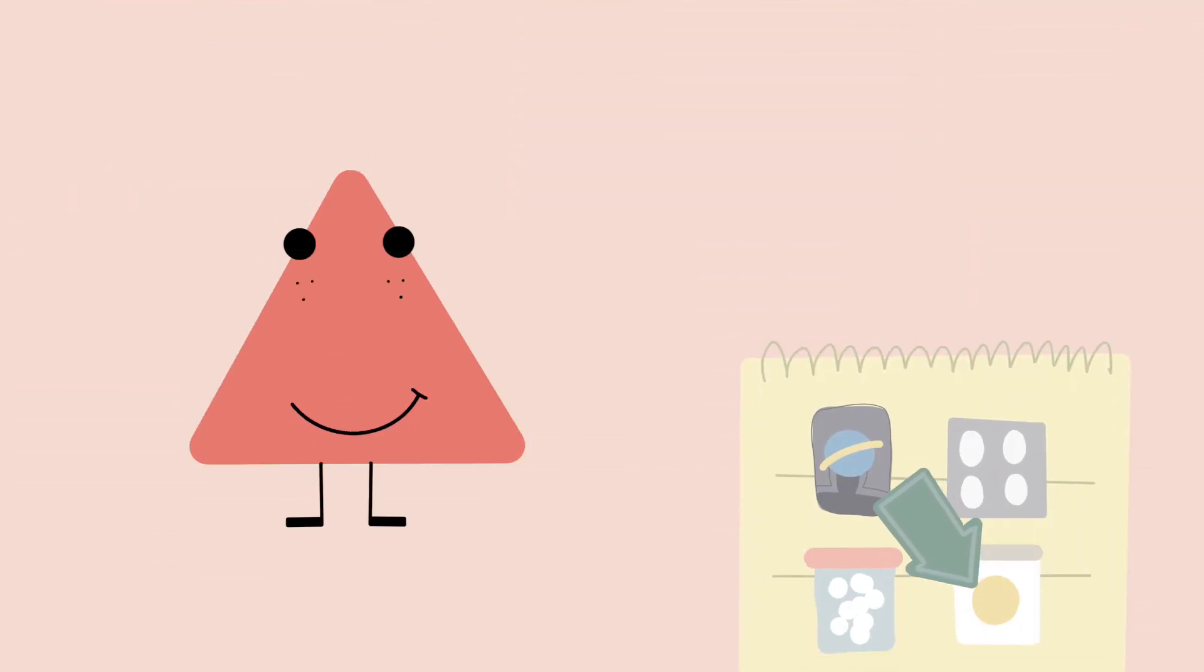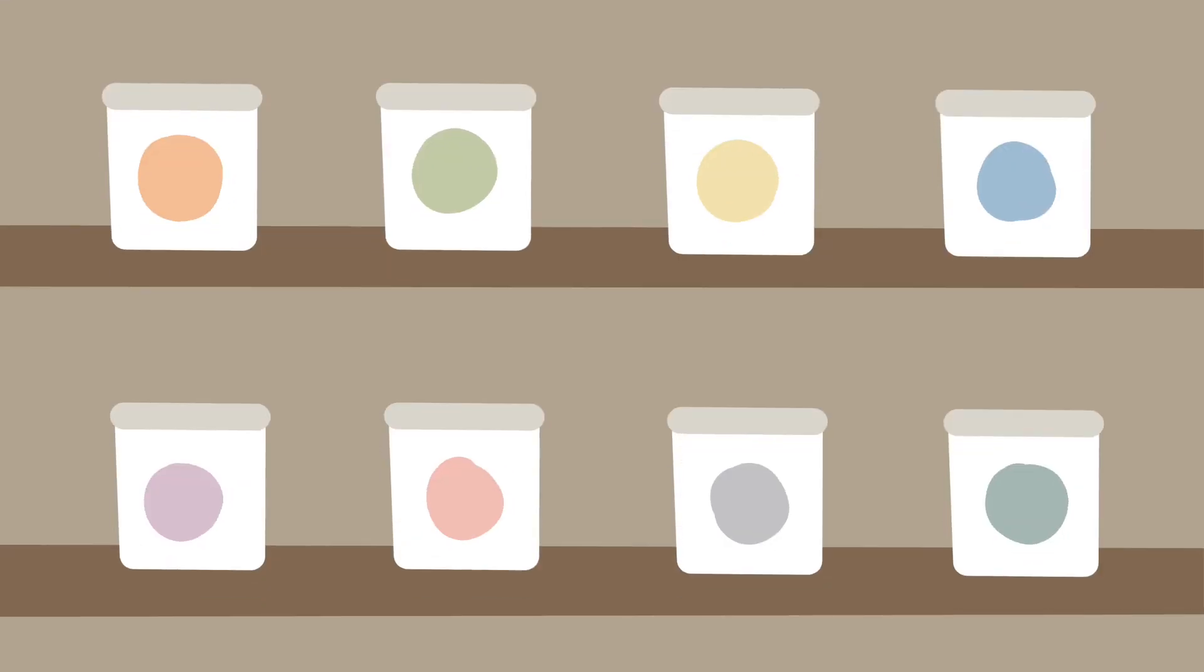The last item on our shopping list is frosting. We need frosting to cover Circle's big birthday cake. Let's go find it! Here we are in the frosting aisle. But what color do we choose? Hmm, let's choose Circle's favorite color. Square, what is Circle's favorite color? Let me think. It's yellow! Perfect! Let's find the yellow frosting. Asher, will you help us find the yellow frosting? Great! Is this the yellow frosting? No, that's orange frosting. Is this the yellow frosting? No, that's pink frosting. Is this the yellow frosting? Yes, that's the yellow frosting! Great job, Asher!